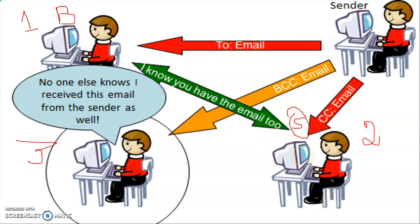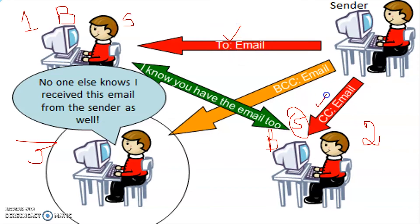Likewise, your sister can also see that your brother received the same mail. So both the recipient in To and the recipient in CC get to know that you have shared the email with both persons. CC is used when you want to keep both recipients informed — when you want both of them to know that the same email was sent to each other.